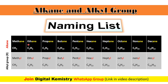Second hai humare paas ethane, jise C2H6 se represent kiya jata hai. Jaise hi ethane mein se ek hydrogen ko remove kiya jata hai, toh iske result mein one hydrogen less ho gaya hai, aur yahan C2H5 yani ethyl group ko represent kar raha hai, jo ki again ek alkyl group hai.